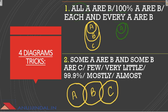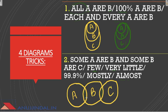यह diagram बनता है जब आपसे ऐसी statement आती है 'All A are B, All B are C', तो आप ऐसे diagram बनाते हैं। Secondly, 'Some A are B and Some B are C' — इसमें few, very little, 99%, mostly, almost — ये सब some का ही meaning रखते हैं। Exam में some की जगह ये words भी बोले जाएं तो meaning some ही होता है। Some A are B का diagram ऐसा बनेगा जहाँ कुछ A, B है और कुछ B, C है — दोनों partially overlap करते हैं।